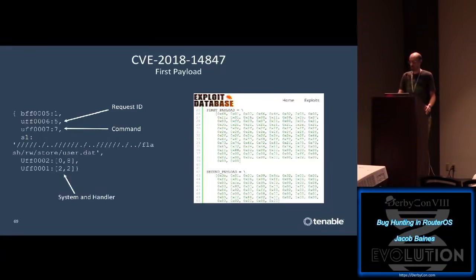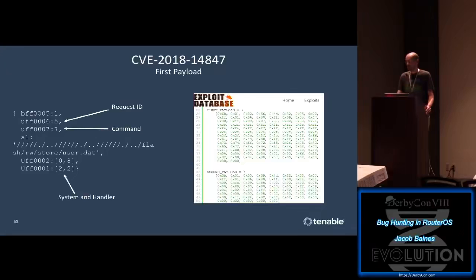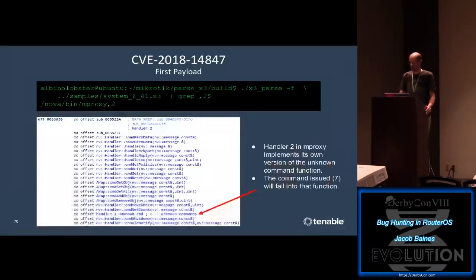Using our newly acquired knowledge of the Winbox protocol we can convert the hex blob to a much easier-to-read JSON format. We can see the system2 array is binary number 2 and handler number 2, the command being used is 7, and we do see directory traversal to the user.dat file which contains the system's usernames and passwords.